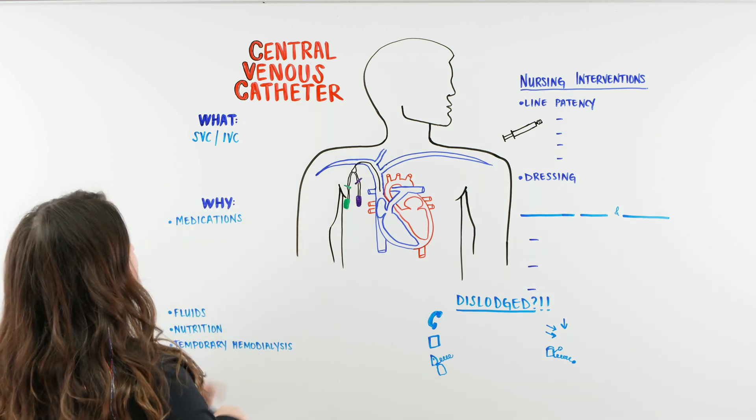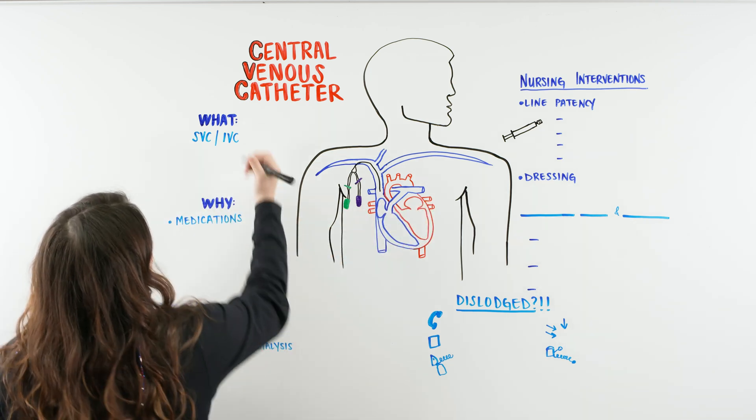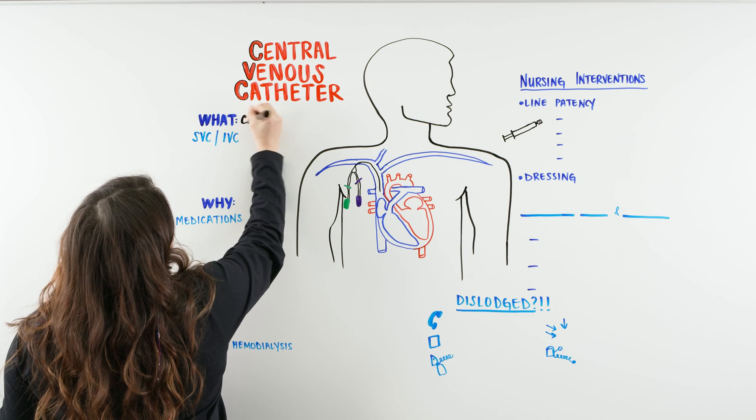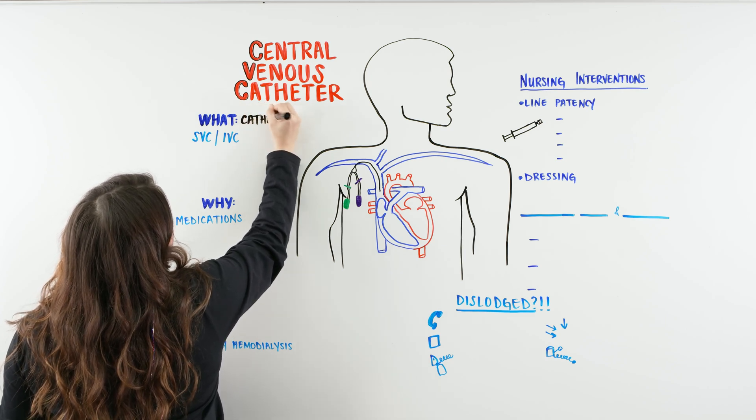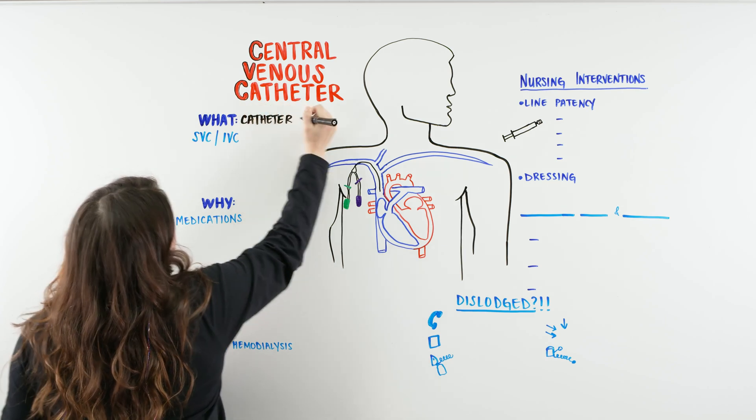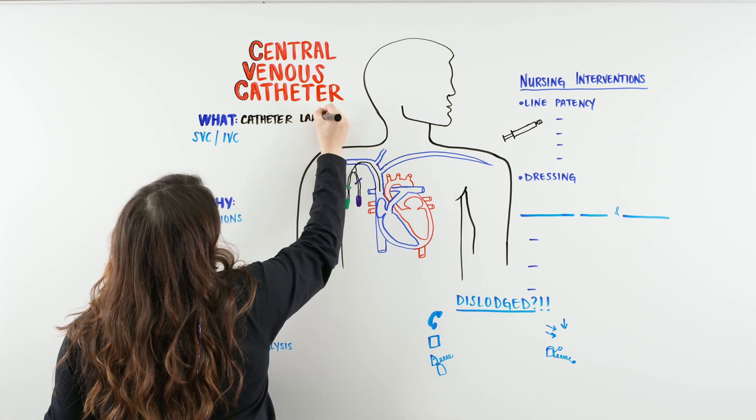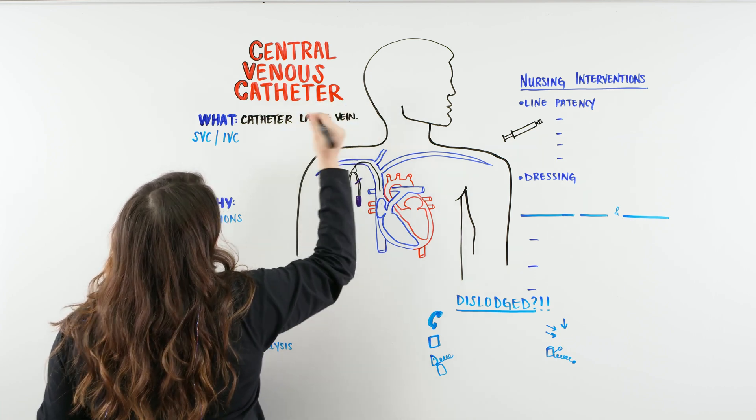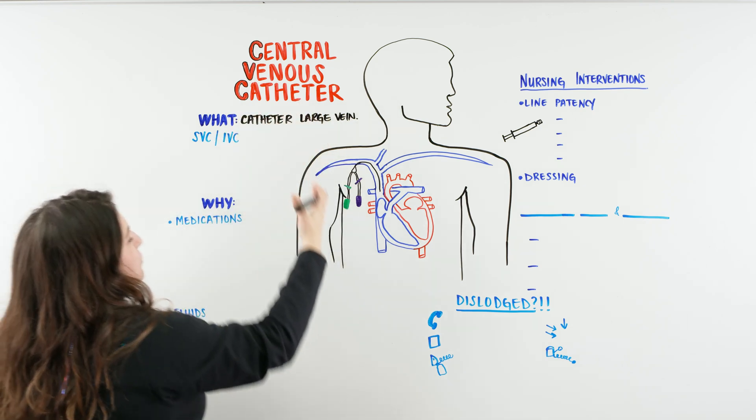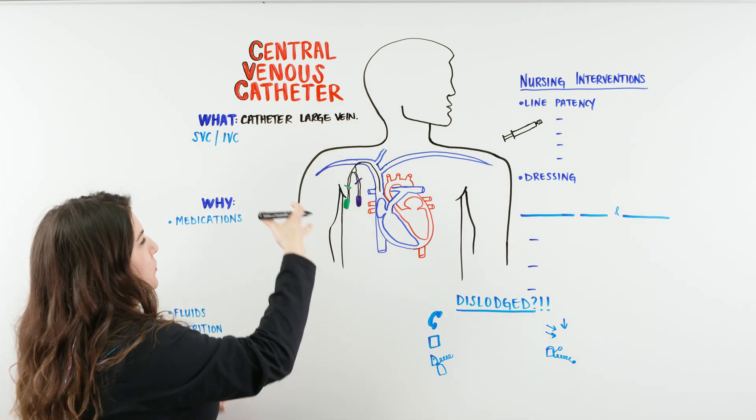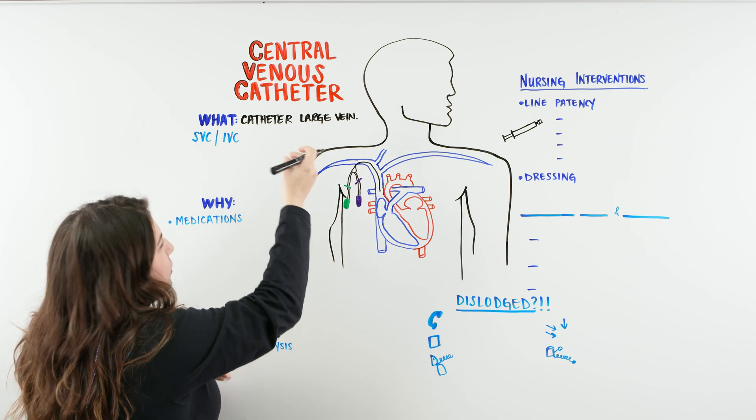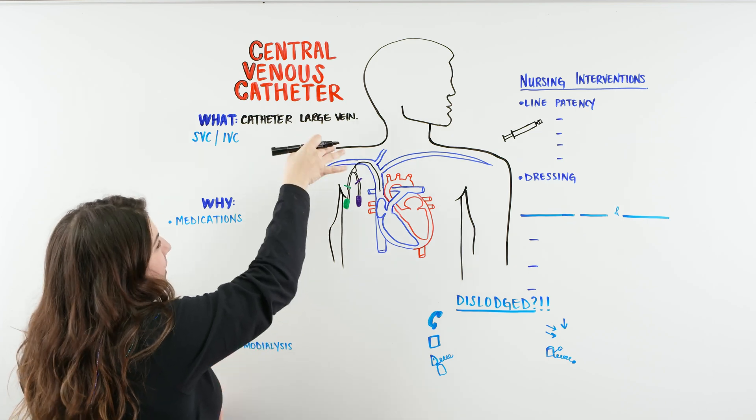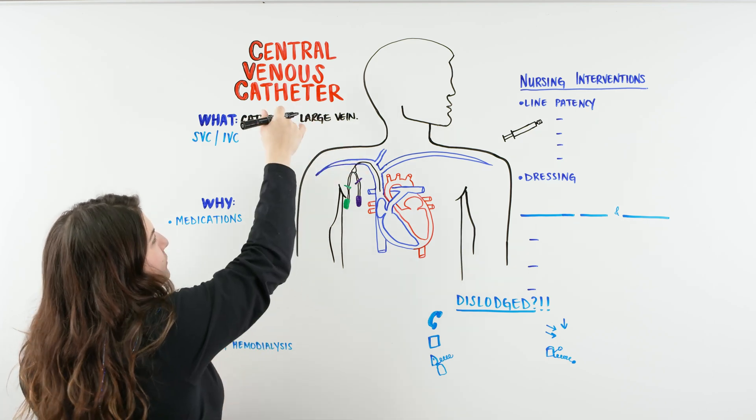Alright, so Central Venous Catheters, what are they? They are a catheter that we insert into a large vein. And when we say Central, Central just means closer to the heart. So we're going to put in this large catheter or a catheter in a large vein that's really close to our heart.